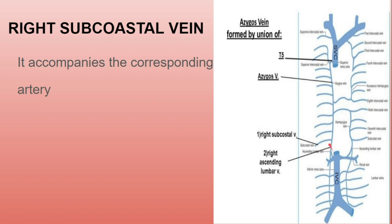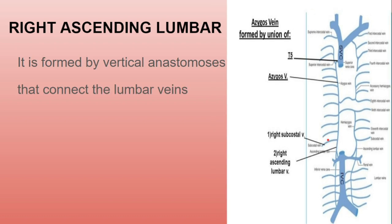The right subcostal vein accompanies its corresponding subcostal artery. The right ascending lumbar vein is formed by the vertical anastomosis that connects the lumbar veins.